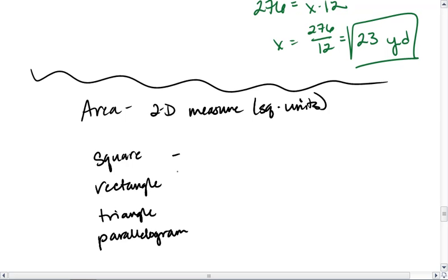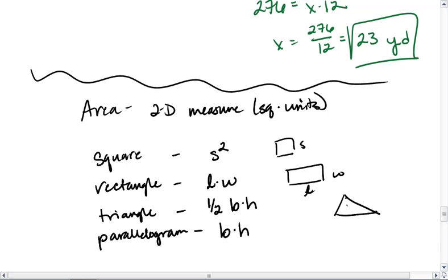If you have not already, these are the equations you want to put on your note card. A square is the side squared, rectangle is length times width, triangle is one-half base times height, and parallelogram is base times height. If you need to add little drawings as well so you know what each of these letters stands for. Especially for your triangle and your parallelogram. It's important that you keep clear what's the base and what's the height.